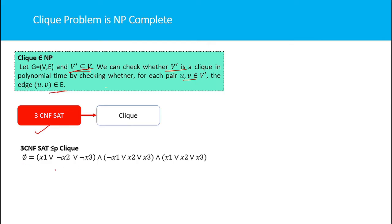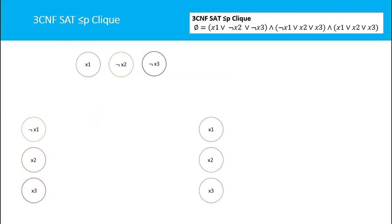I am using a 3CNF boolean equation containing three variables and three clauses, each clause containing three literals. Now let us reduce the 3CNF-SAT problem to the clique problem. You may wonder how to transform a boolean equation into a graph — I will show you how to convert a boolean equation to a graph and then find whether the graph has a clique.